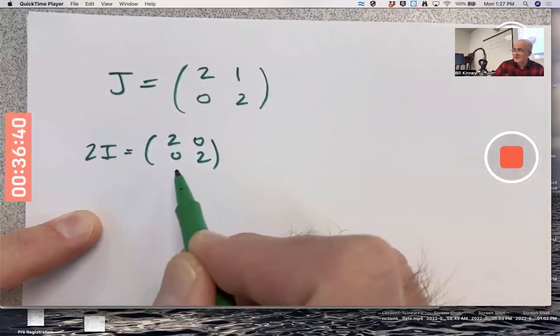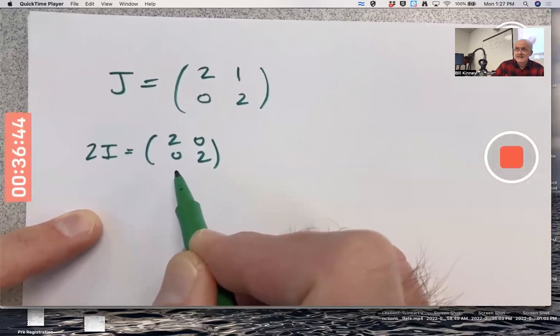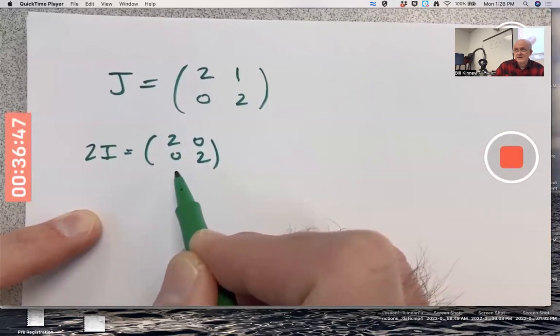This is already a diagonal matrix. It's diagonalizable because it's already diagonal. It does have a basis of eigenvectors. Every non-zero vector in the plane is an eigenvector for this, turns out.